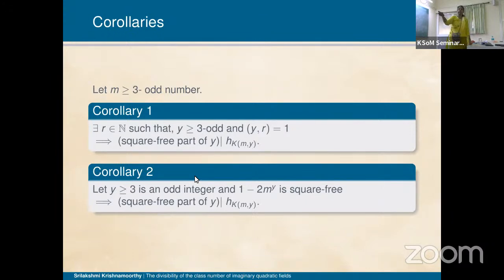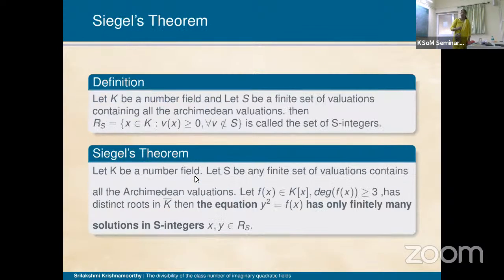As a corollary, we cannot yet say the full Y divides H of K(m, Y), but we can say the square-free part of Y divides the class number. In Corollary 2, if 1 − 2m^Y is square-free, we also get that the square-free part of Y divides the class number.